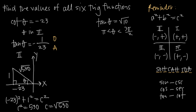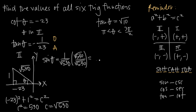Now that we have all three sides, we can find sine, cosine, cosecant, and secant. Sine equals opposite over hypotenuse, so sine of theta equals 1 over square root 530. Rationalizing the denominator by multiplying by root 530 over root 530 gives us square root 530 over 530.